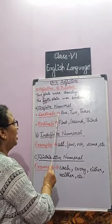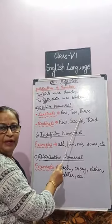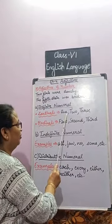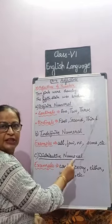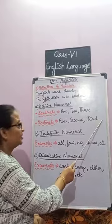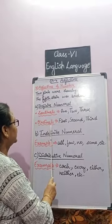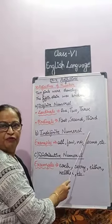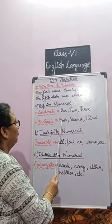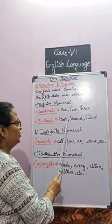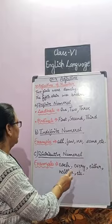Cardinals answer the question 'how many?' For example: one boy, two boys, three boys. Ordinals answer the question 'which?' For example: first bench, second bench, third bench.